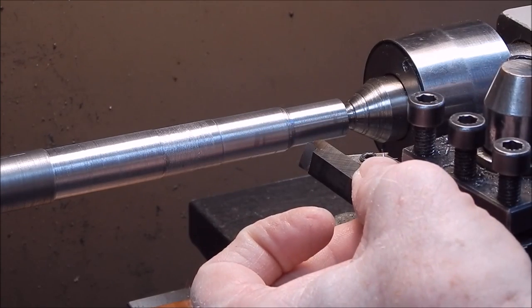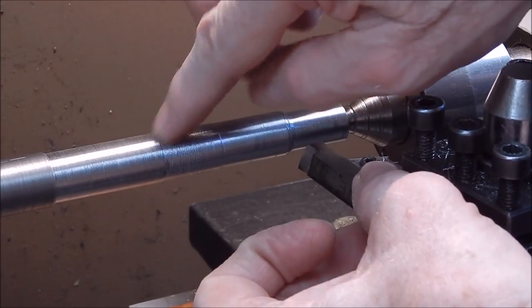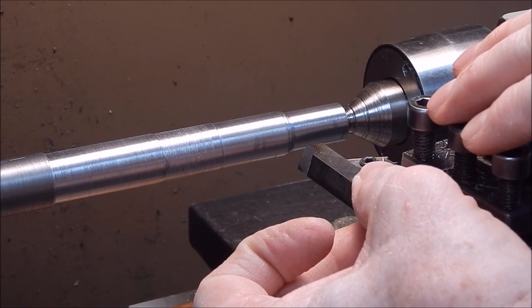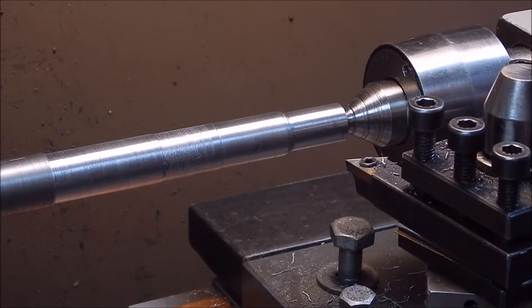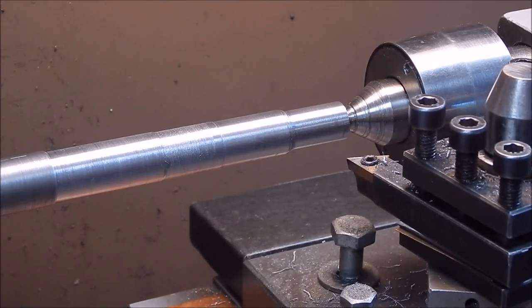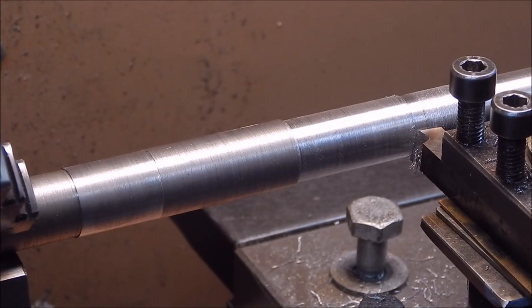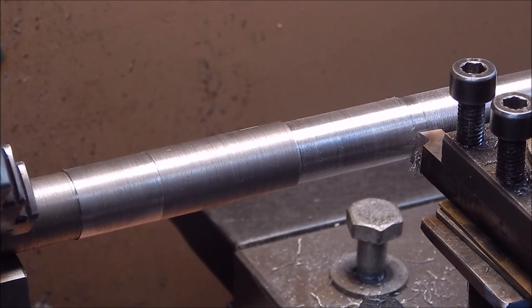But what we'll do is we'll run the cutter across this section here. I'll wind back the speed so we do it how most people would do it, and we'll see how it performs. Right, well the lathe is set at 125 RPM and we'll feed in the cutter and see how it goes.